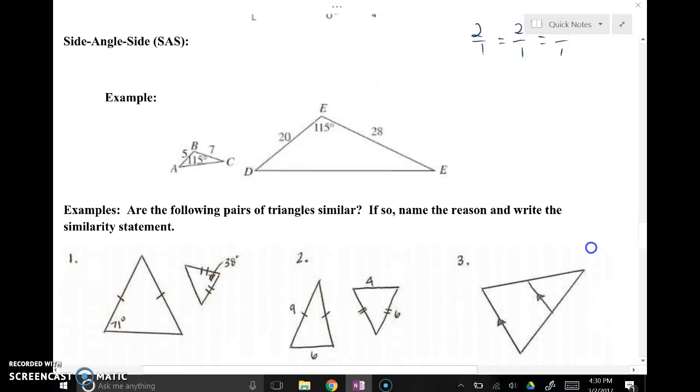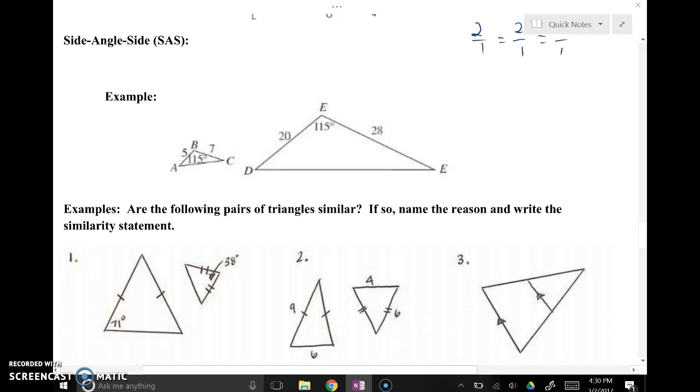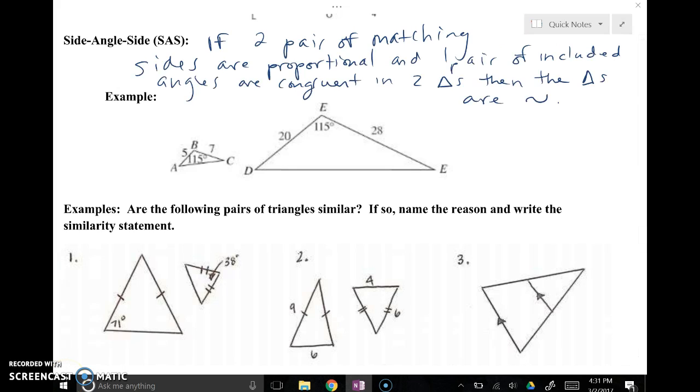Alright, our last shortcut for proving triangles similar would be side, angle, side. And side, angle, side similarity is if two pairs of matching sides are proportional and one pair of included angles are congruent in two triangles, then the triangles are similar. So this is like side, angle, side congruence where you have that wraparound pattern. Side, side, and the angle in between. That's what we mean by included angle. So we've got to check and make sure that the sides are proportional. Five goes with twenty. Seven goes with twenty-eight. Five over twenty reduces to one-fourth. Seven over twenty-eight reduces to one-fourth. So we've just showed that they are proportional. One-fifteen is the same as one-fifteen. So that's what side, angle, side similarity looks like.